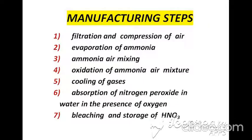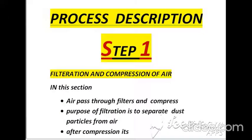Manufacturing of nitric acid takes place through seven stages: the first is filtration and compression of air; the second is evaporation of ammonia; the third is ammonia-air mixing; the fourth is oxidation of the ammonia-air mixture; the fifth is cooling of gases; the sixth is absorption of nitrogen dioxide in water in the presence of oxygen; and the last is bleaching and storage of nitric acid.